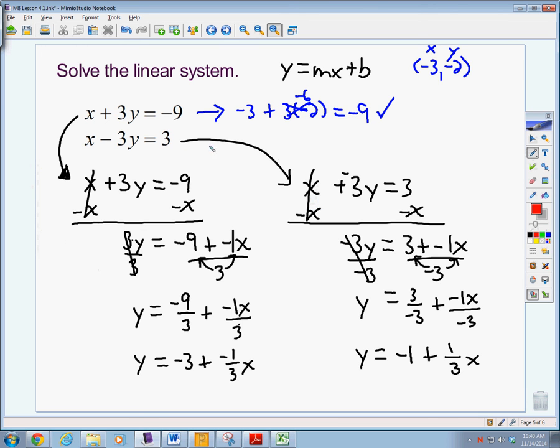And if we check the second one, we would substitute negative 3 in for x, minus 3 times a negative 2. Keep, change, change. Negative 3 plus negative 3 times negative 2 is a positive 6. So negative 3 plus 6 does equal 3. And we see that this ordered pair right there is a solution to both equations.